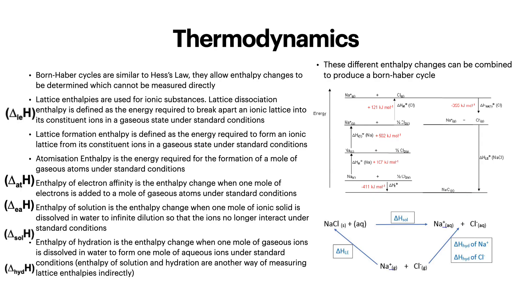Starting with thermodynamics. You've got the Born-Haber cycles, which are similar to Hess's law, which we saw in part 1, allowing enthalpy changes to be determined which cannot be measured directly. Lattice enthalpies are used for ionic substances. Lattice association enthalpy is defined as the energy required to break apart an ionic lattice into its constituent ions in a gaseous state under standard conditions. Lattice formation enthalpy is defined as the energy required to form an ionic lattice from its constituent ions in a gaseous state under standard conditions. Atomization enthalpy is the energy required for the formation of a mole of gaseous atoms under standard conditions.